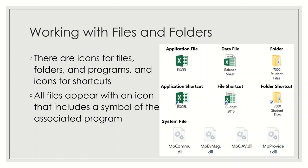The application file is a type of file that includes very detailed instructions for the processor on what tasks to perform, and it is saved in the Program Files folder on your computer. The data file is a type of file that contains information you have entered and saved in one of your applications — for example, a budget file in Excel, a letter in Word, or a database in Access. These files can be stored anywhere on your computer. The system file also contains detailed instructions for the processor, except they are part of the operating system.